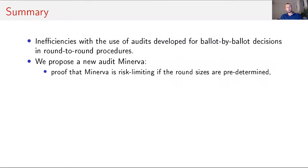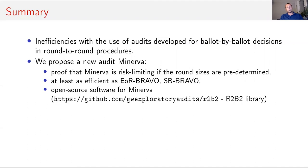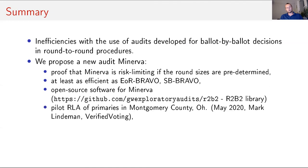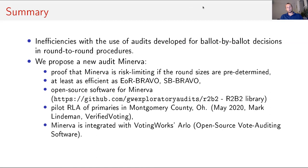And in fact, what we've shown was the following. We've presented that ballot-by-ballot decisions in round-by-round procedures are inefficient. And then we showed that Minerva is risk-limiting, is at least as efficient as end-of-round Bravo or selection-ordered Bravo. We also provide open-source software. Pilot RLA of primaries was performed in Montgomery County, Ohio, in May 2020 by Mark Lindeman. And Minerva is integrated with VotingWorks, that's the open-source vote-auditing software from Arlo. Thank you very much.